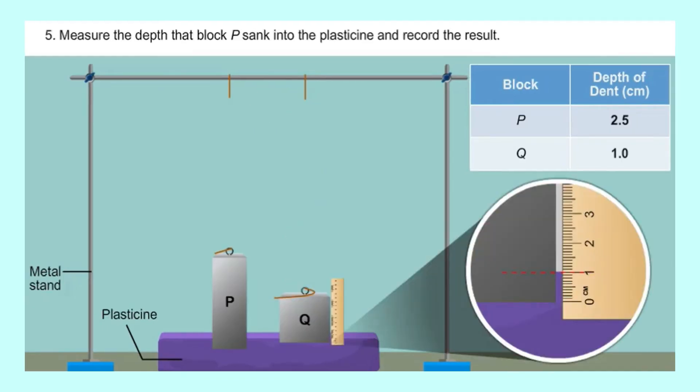As you can see in the results table, even though block P and Q have the same mass, the depth of dent are different. As you can see, block P has a deeper dent, which is 2.5 cm, compared to block Q.